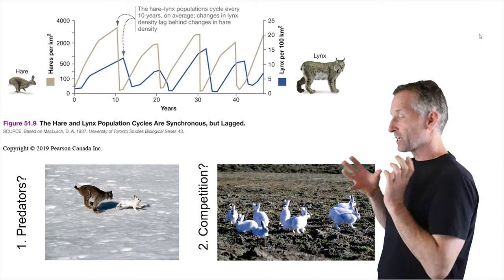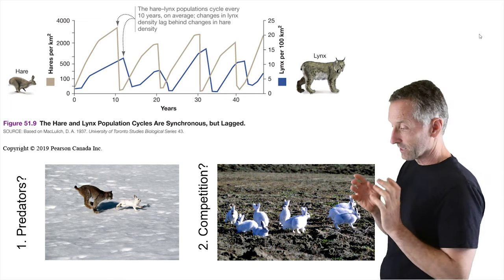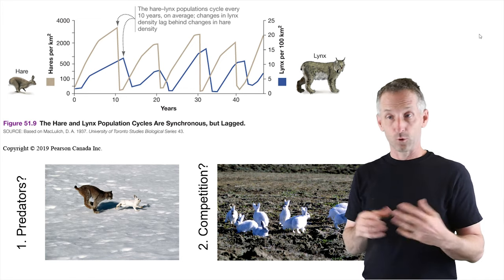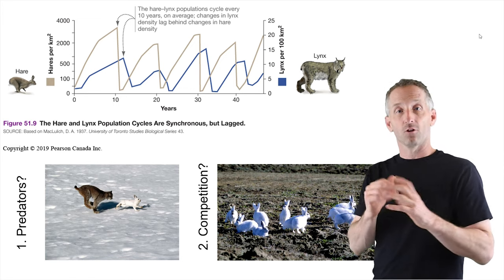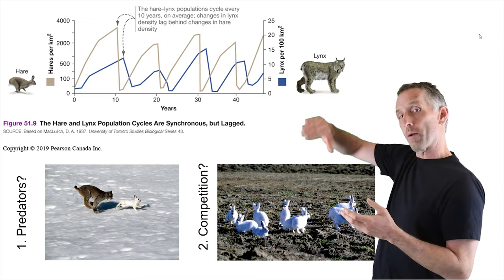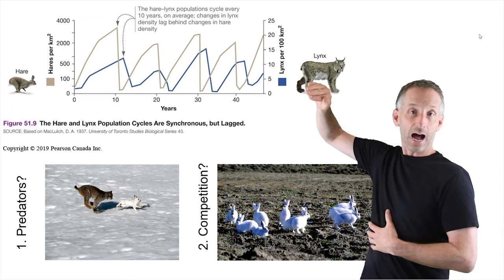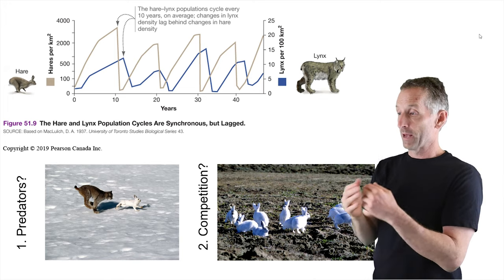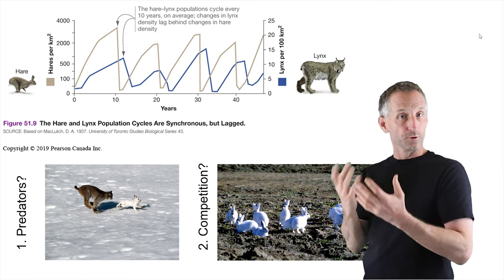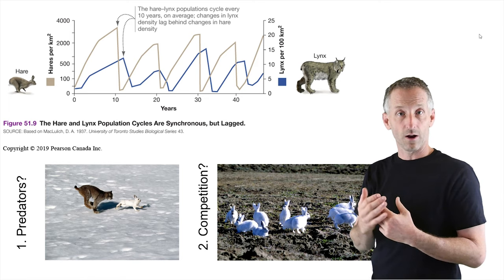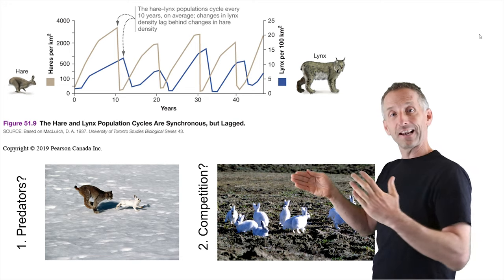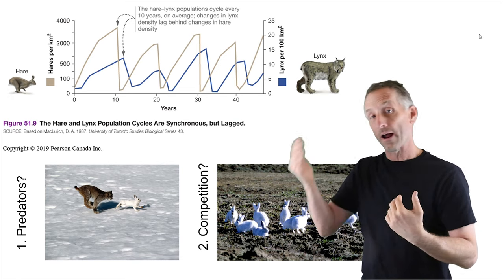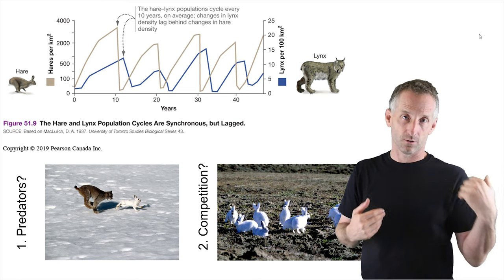Another hypothesis might be competition within the snowshoe hare species. When they're not very abundant, there's lots of food for everybody — no food limitation — so they have lots of offspring that survive and increase dramatically. But when the population cycle is at the high end, there are suddenly too many snowshoe hares for the food resources, so they start to die, don't reproduce well, and plummet. Meanwhile the lynx passively follow the abundance of the hares. In one case lynx are the drivers; in the other, just the followers.